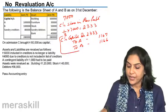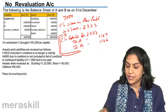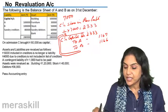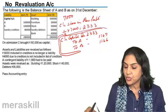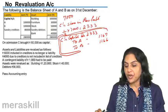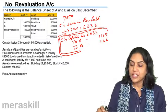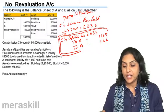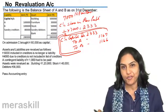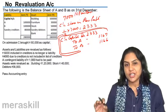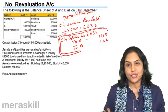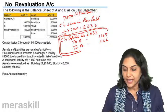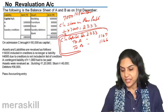One entry is passed to record all these changes. That means only the net entry is passed with only the net profit on revaluation. C's share of profit is debited to C's capital account, and A and B's capital accounts are credited in their sacrificing ratio.